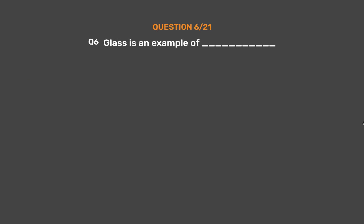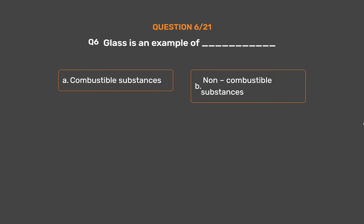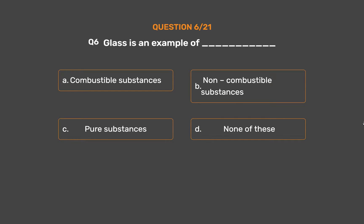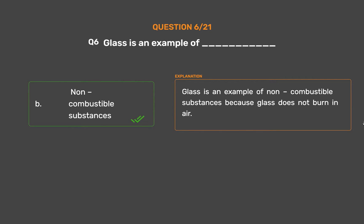Question number 6: Glass is an example of _____. Option A: Combustible substances. Option B: Non-combustible substances. Option C: Pure substances. Option D: None of these. The correct answer is Option B: Non-combustible substances. Glass is an example of non-combustible substances because glass does not burn in air.